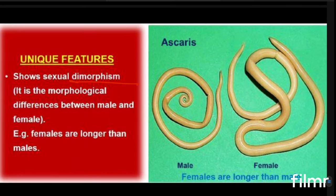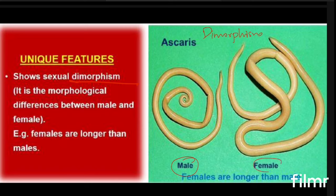These organisms show sexual dimorphism — that is, a morphological difference between male and female. For example, in Ascaris, the male is smaller than the female; the female is very big length-wise compared to the male. Females are longer than males, and by seeing the morphology itself you can determine whether it is a male or female organism.